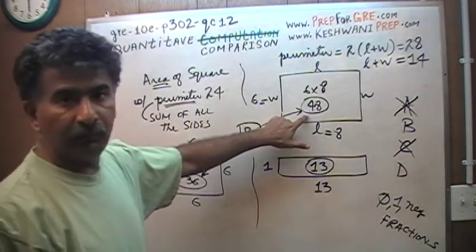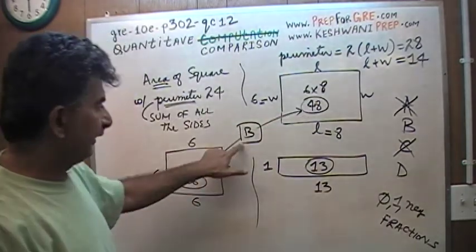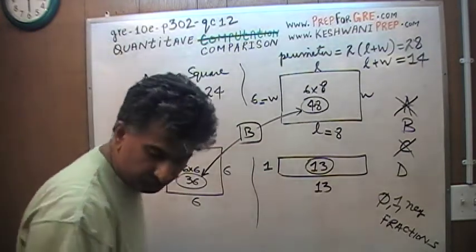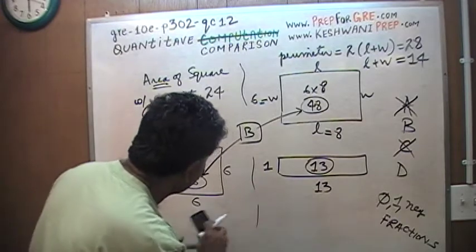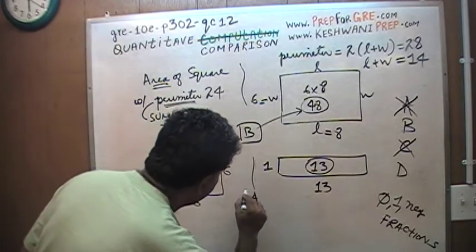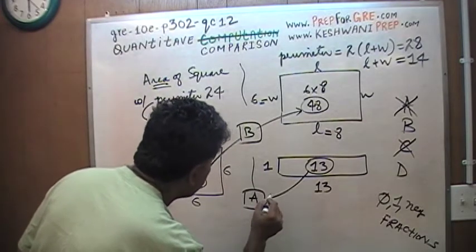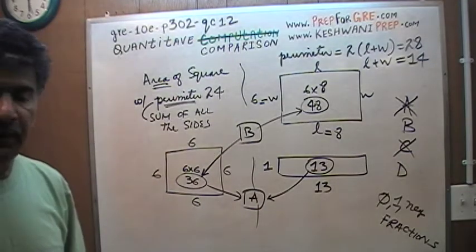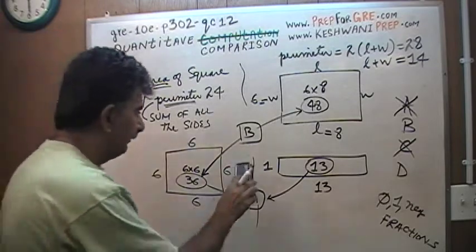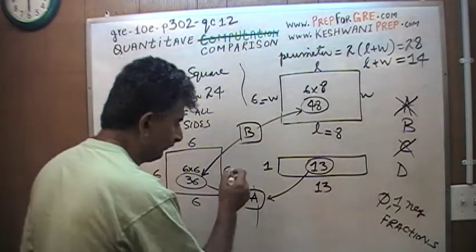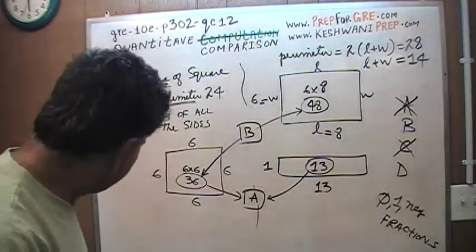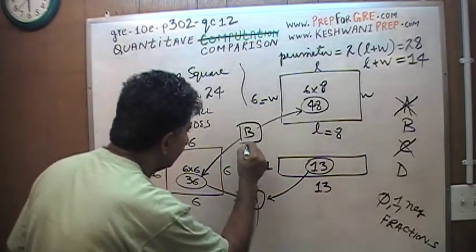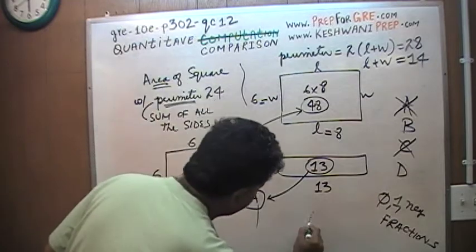Before, it had an area of 48. 48 compared to 36 gave me the answer of B, but now 13 compared to 36 gives me the answer of A. Since I'm getting conflict in the answers, before I was getting B, now I'm getting A. Since we have conflict in the answers, therefore the correct answer is D.